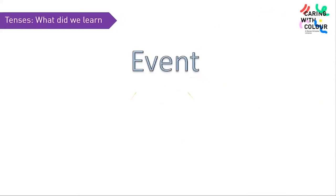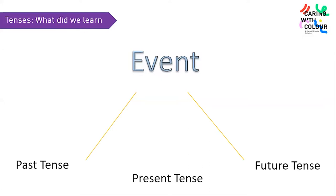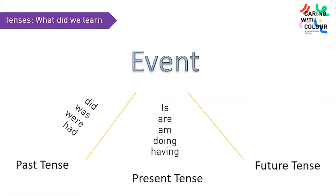Let us summarize what we have learnt so far. Every event happens in one of three tenses. If an event has already happened, it belongs to the past tense — we use words like did, was, were, had. When an event is still in process, we refer to it in present tense — is, are, am, doing, having. If an event is yet to happen, we refer to it in future tense, using words like will, shall. Thank you, Sonia. Welcome, Kriti and Vivek.